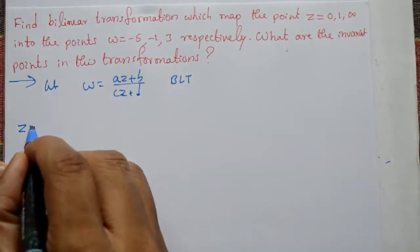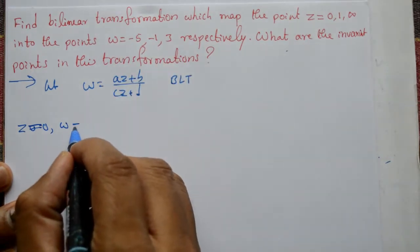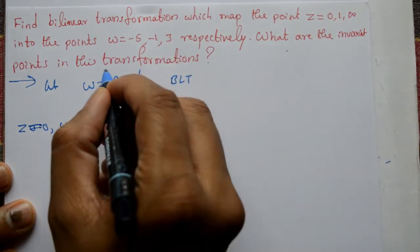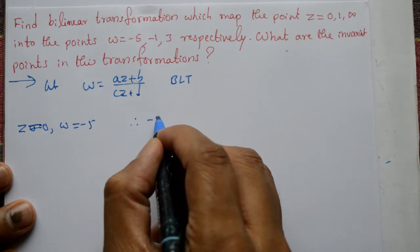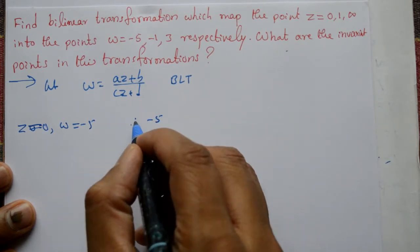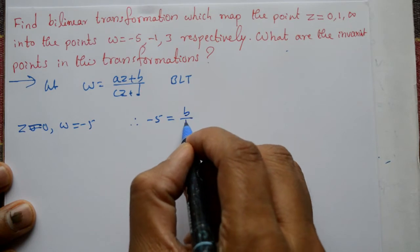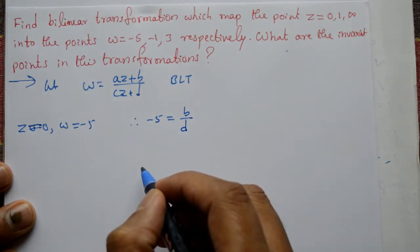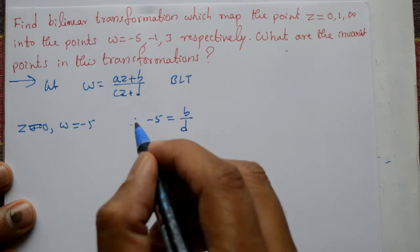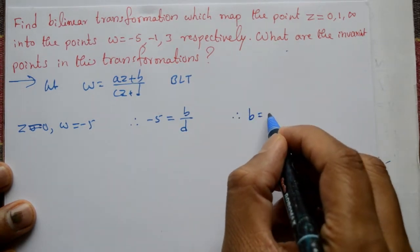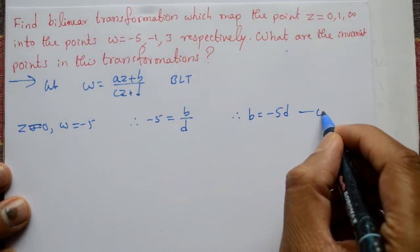First, z = 0 and ω = -5 lehenge. Is equation me dalne par: -5 = b/d, therefore b = -5d. This is equation number 1.